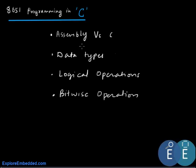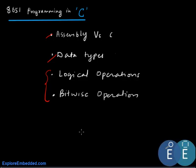To review what we have covered: assembly versus C, the basic data types used when writing C code for the 8051, and logical and bitwise operators. In the next tutorial we will set up the tools and write our first program, interface LEDs, blink them, and check. Thank you for watching.